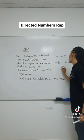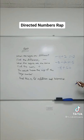Negative 4 plus 6. When the signs are different, we find the difference. The difference between 4 and 6 is 2. And the answer takes the sign of the larger number, and the larger number is positive 6. So you leave your answer as positive 2.